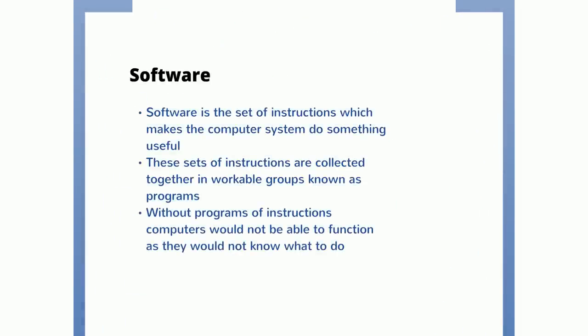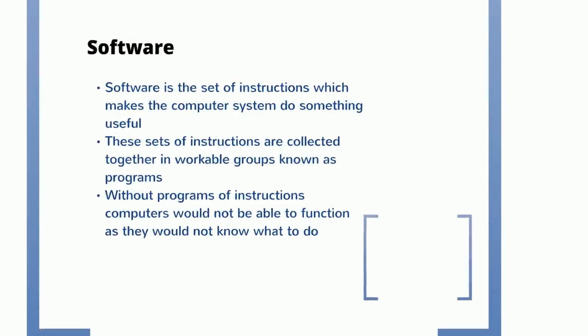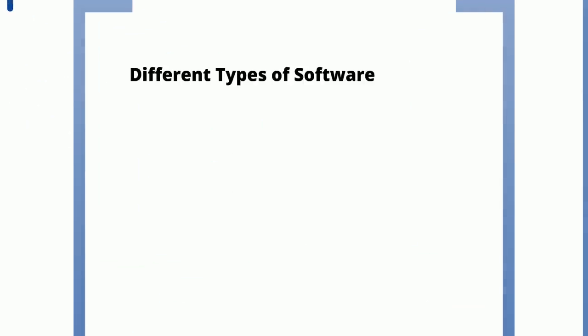So, software. We have hardware — we've identified that. The other type of component that we have for a computer system is software. Software is a set of instructions which make the computer system do something useful. These sets of instructions are collected together in workable groups known as programs. Without programs of instructions, computers would not be able to function, as they would not know what to do. There are different types of software: system software and application software.